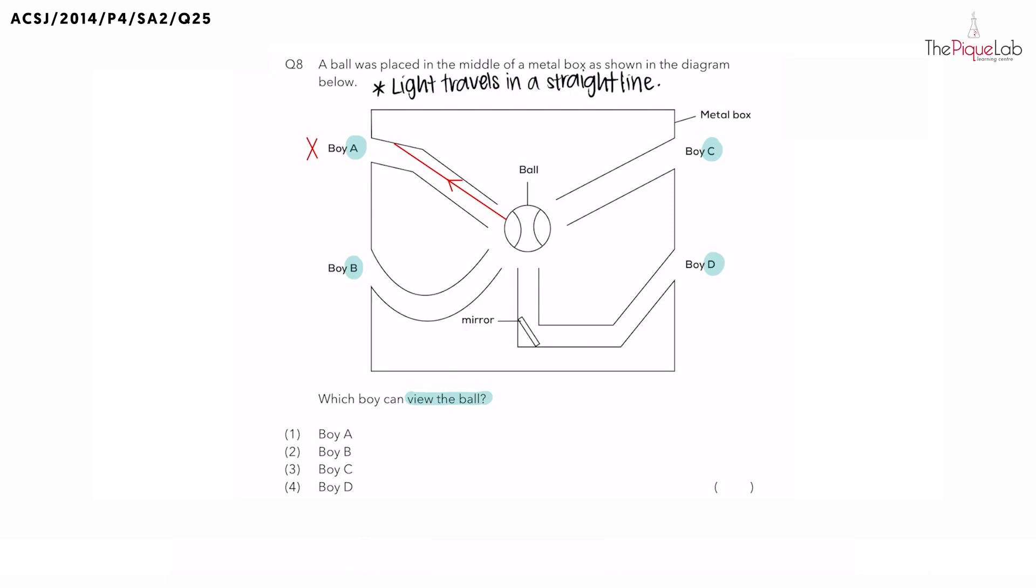What about boy B? Same thing, light reflected off the ball, which travels in a straight line, is blocked once again by the metal box. In that case, can boy B see the ball? No. Boy B is not able to see the ball.